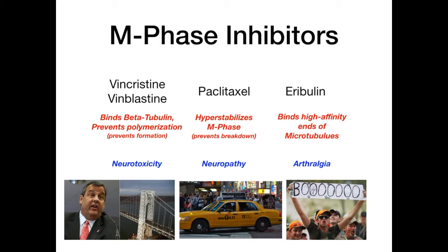Eribulin causes arthralgias — when someone's booing and holding up a sign, they might get wrist pain, which is an arthralgia. There's no great mnemonic for neuropathy being paclitaxel's side effect, just memorize it. To recap: vincristine is neurotoxic; eribulin causes arthralgias from 'booing'; paclitaxel causes neuropathy — memorize that one directly.